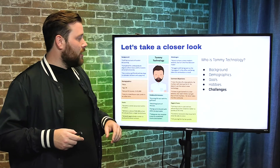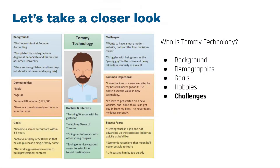Looking at his challenges: he wants a more modern website but isn't the final decision maker. He struggles with being seen as the younger guy in the office and not being taken seriously. His common objections include: 'I love the idea of a new website but my boss will never go for it — he doesn't see the value in new technology' and 'I can't get buy-in from my boss; he never takes my ideas seriously.'